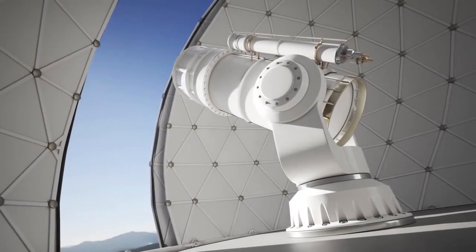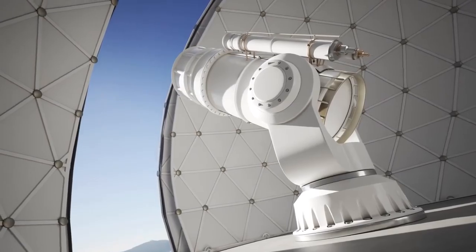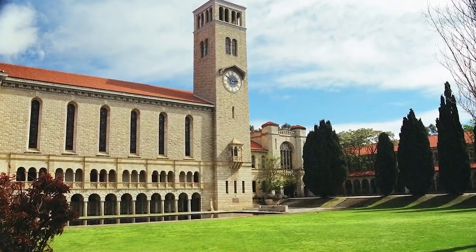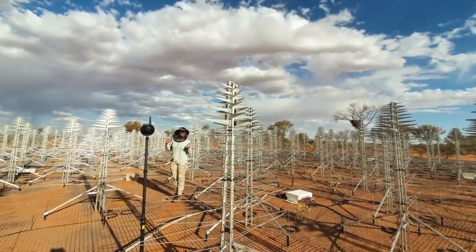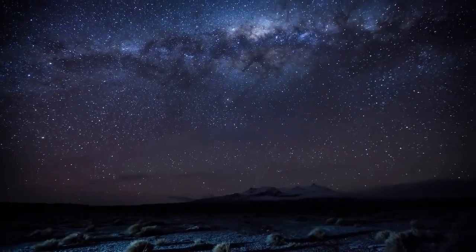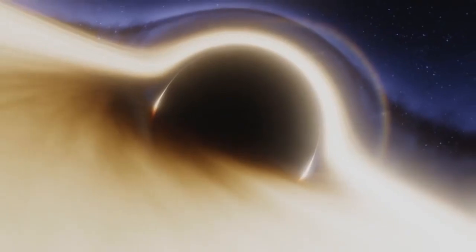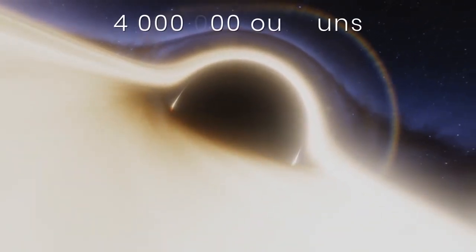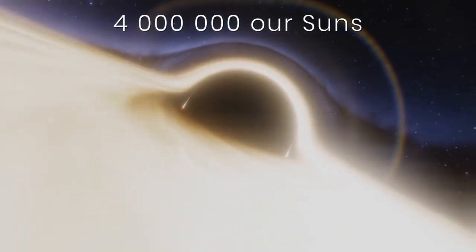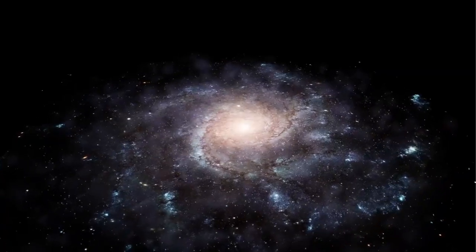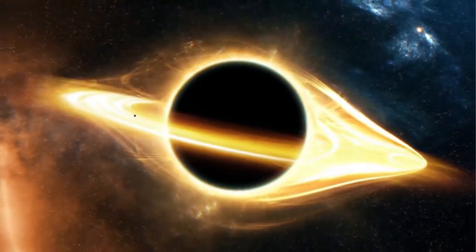But this is not important. After all, according to the calculations of the International Center for Radio Astronomy Research in Western Australia, the newly formed galaxy will be doomed anyway. As you know, in the very center of our Milky Way, there is a supermassive black hole. It is four million times more massive than our Sun. There is a similar black hole in the center of the Andromeda galaxy.